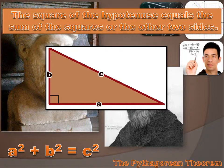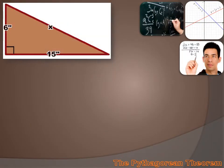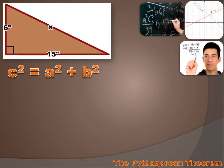Now you're going to soon discover this is a really powerful little bit of information. Let's see how this might be helpful. Let's say we had a triangle and we knew that one side was 6 inches in length, another side was 15 inches in length. We knew it was a right triangle because it had that little square in the corner, but we didn't know the length of the hypotenuse. Pythagoras would tell us that the square of the length of the hypotenuse equaled the sum of the squares of the other two sides, so we could just insert the information from our problem into the Pythagorean equation and figure out what we didn't know.